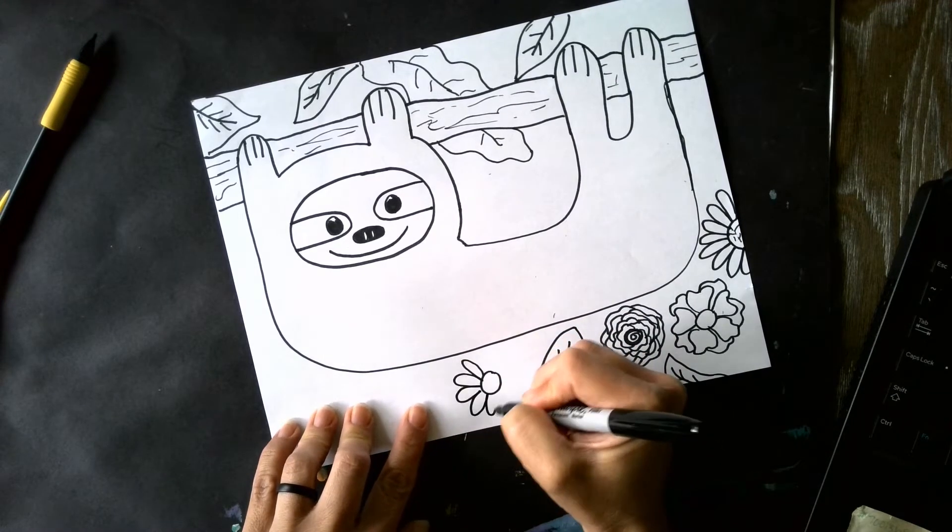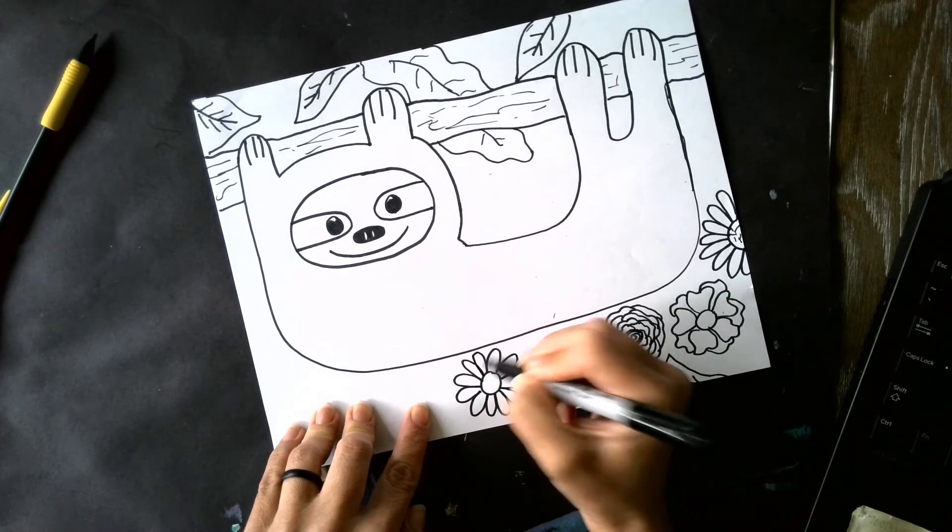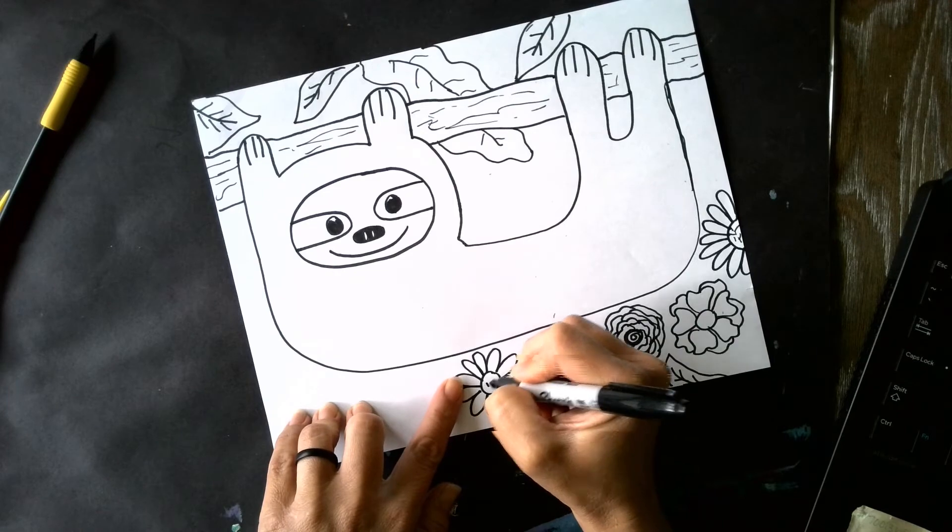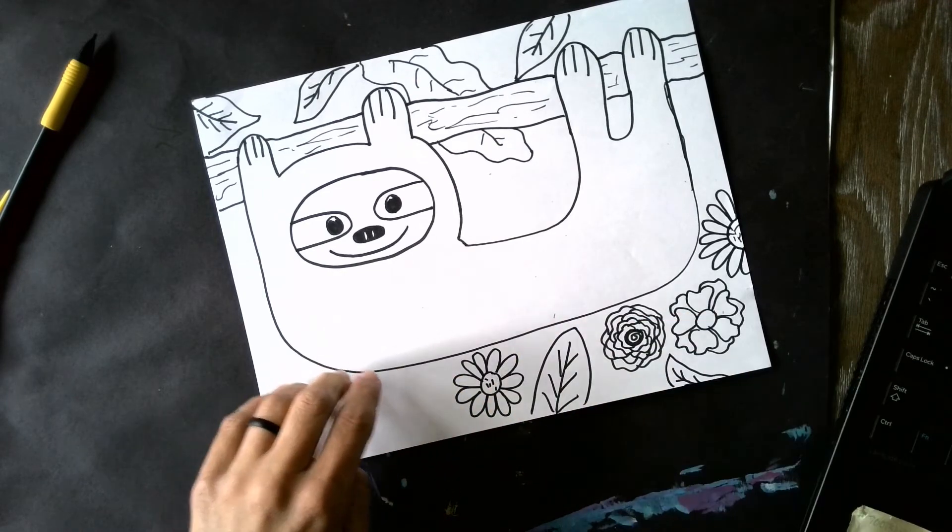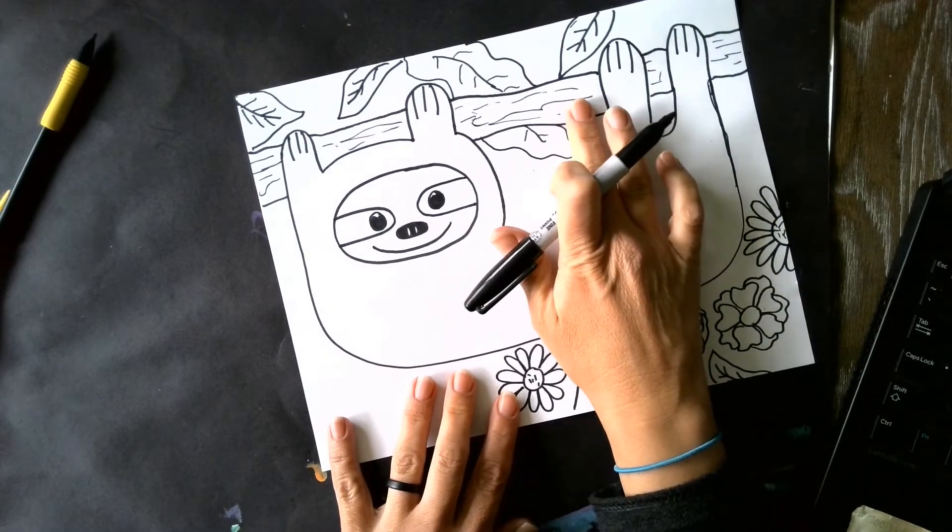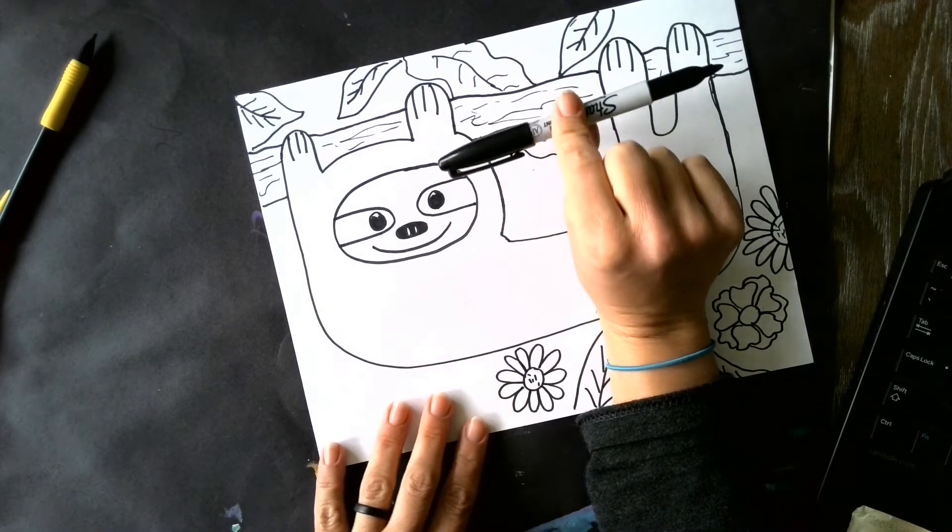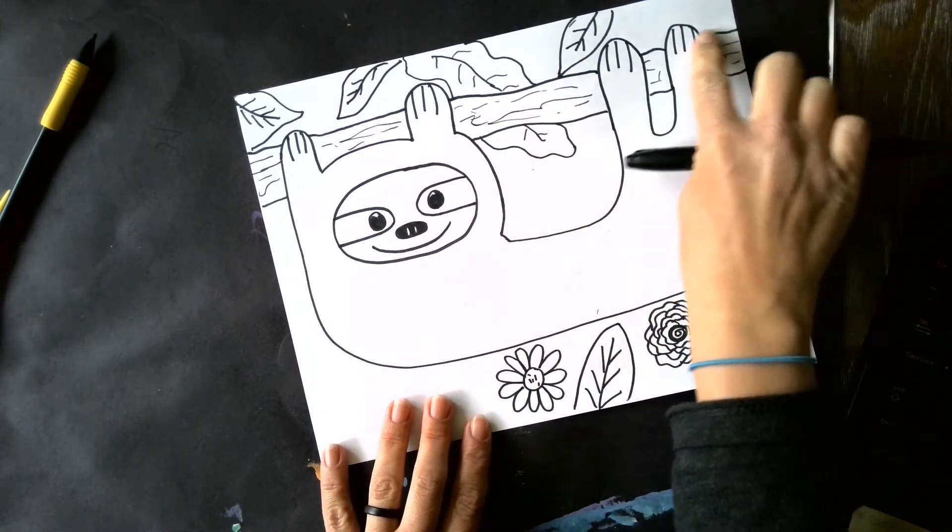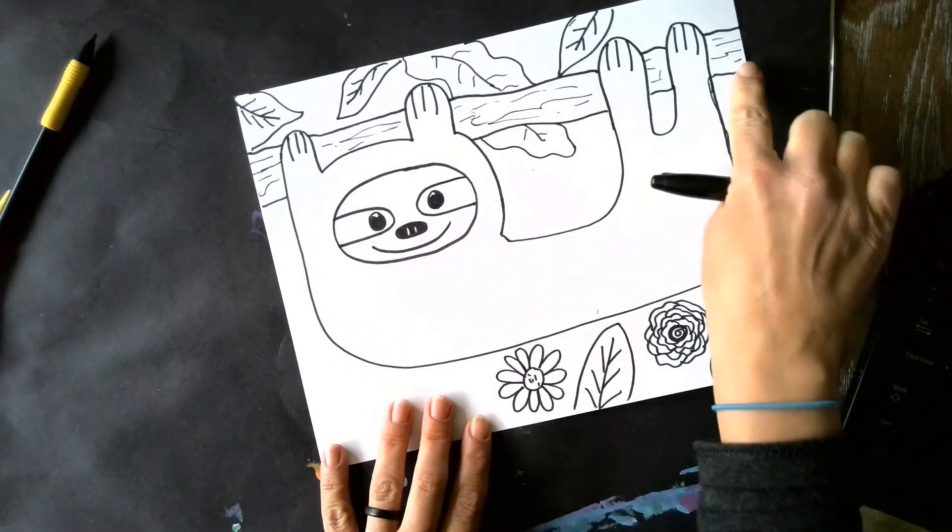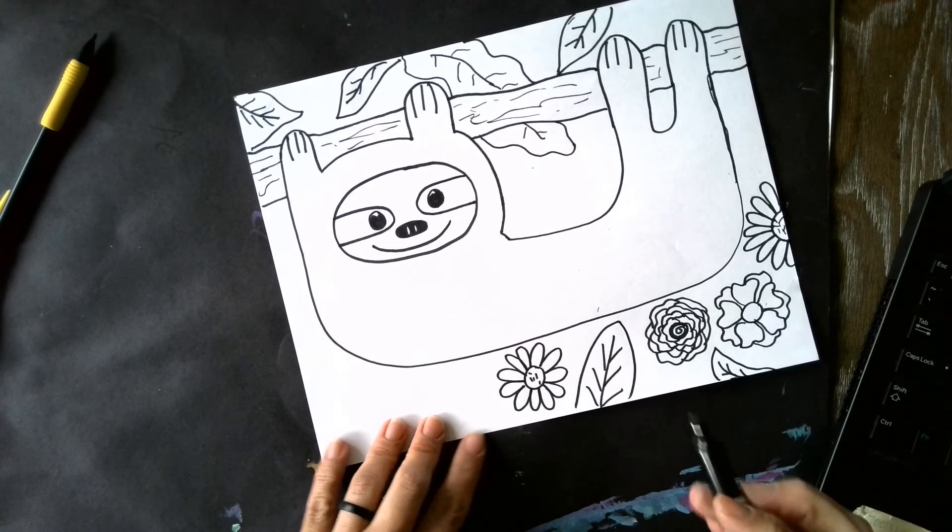And make sure that when you make your flowers, you make it so that you can color it in. So if I draw the stems of my flowers, kind of like how I did my branch, I can't just draw a single line because then you can't color in a single line. You have to kind of draw the top of the branch and then the bottom of the branch or the top of the stem, the bottom of the stem, so that you could color it in.